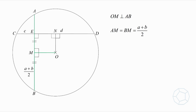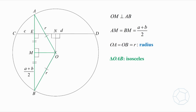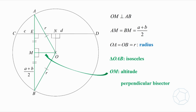This result can be understood easily. If we construct the line segments OA and OB, then they are equal in length, because both of them are radii of the circle. Let's call it R. Therefore, triangle OAB is isosceles. As OM is an altitude of the triangle and OA is equal to OB, so it is also a perpendicular bisector of the isosceles triangle.